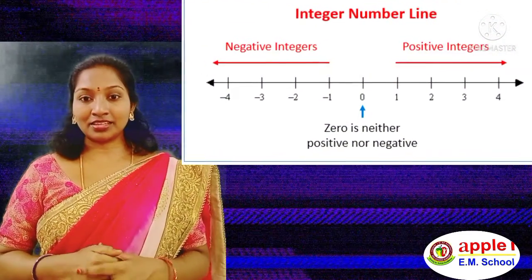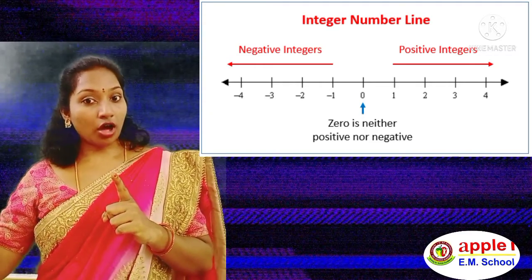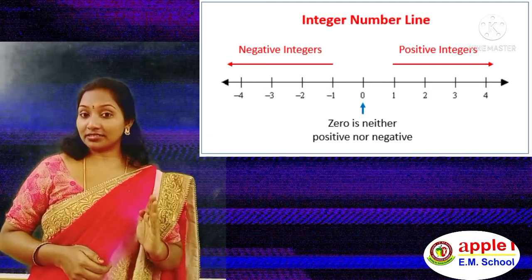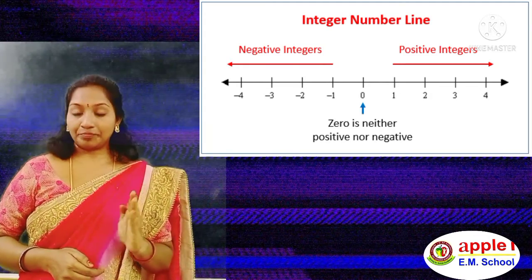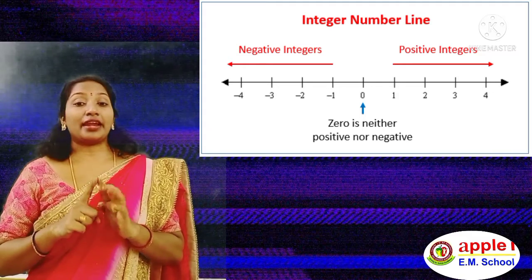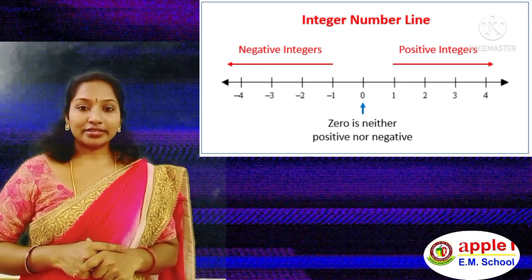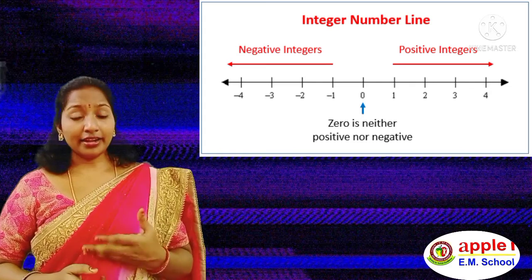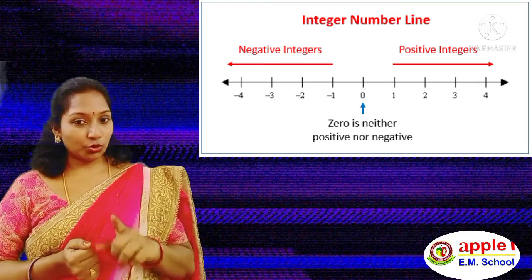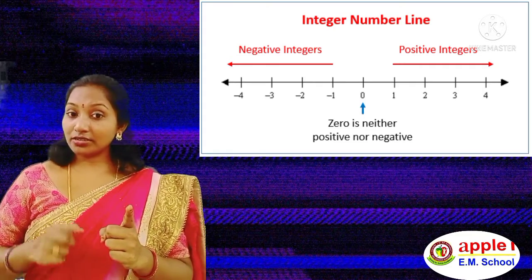See this number line. See here 0. The numbers which are written to the right side of 0 are called positive numbers. The numbers which are on the left side of 0 are negative numbers. And what about 0? 0 is neither positive nor negative.